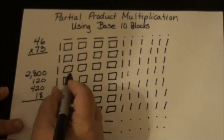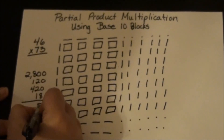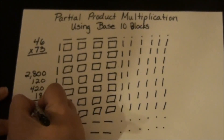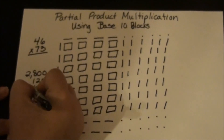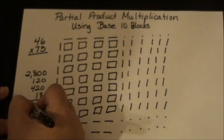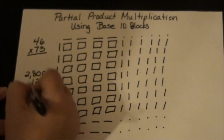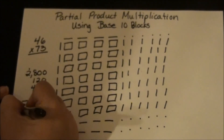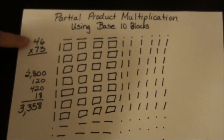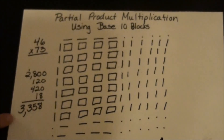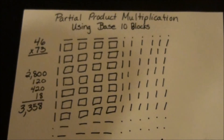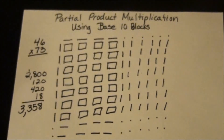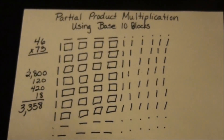Now all I have to do is add this up: 2,800 plus 120 plus 420 plus 18. Adding the digits: 8, then 2, 4, 5, 8, 12, 13 — carrying gives 3,358. And if I multiplied this out traditionally, I would get the very same answer. That's partial product multiplication using base 10 blocks.